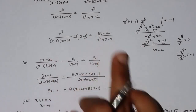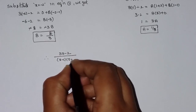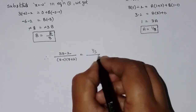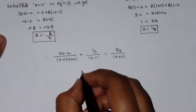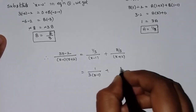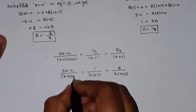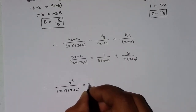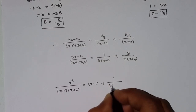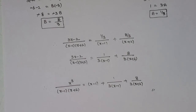Therefore, the overall solution is: x cube by x minus 1 into x plus 2 equals x minus 1 plus 1 by 3 into x minus 1 plus 8 by 3 into x plus 2. This is our solution.